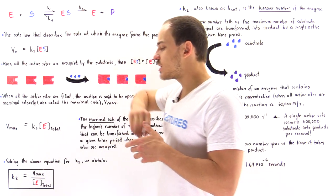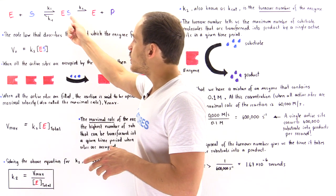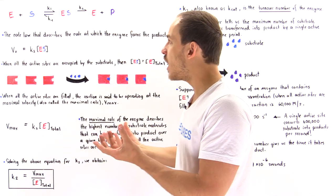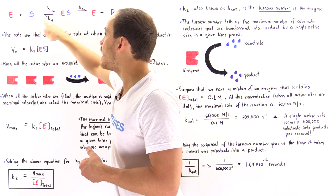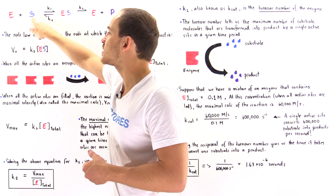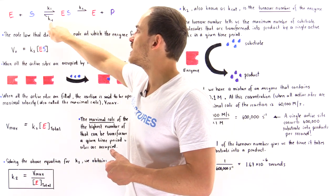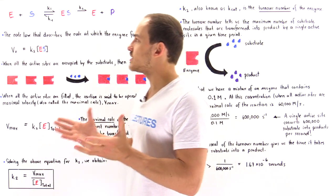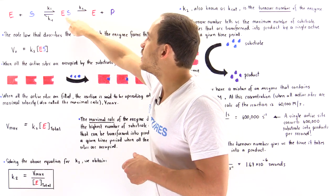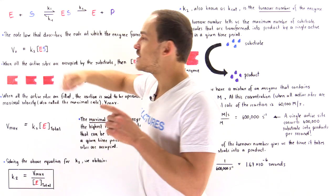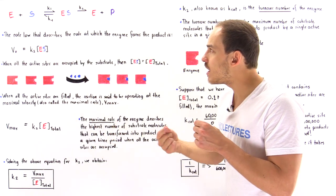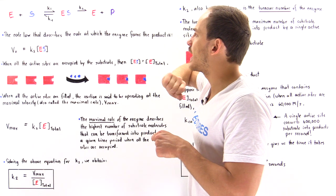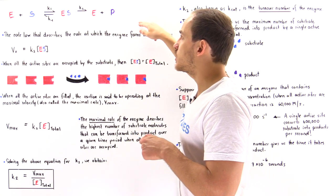Once we form the enzyme-substrate complex, one of two things can take place. Either the substrate dissociates from the active site before being transformed into product — the complex breaks back into enzyme and substrate with rate constant K-1 — or, the enzyme catalyzes the transformation of the substrate into the product, which then dissociates from the active site, with rate constant K2.